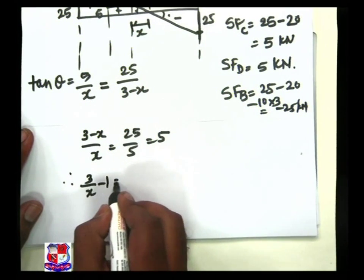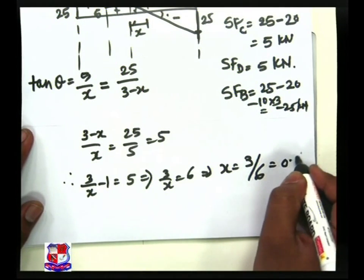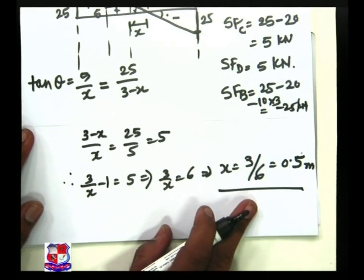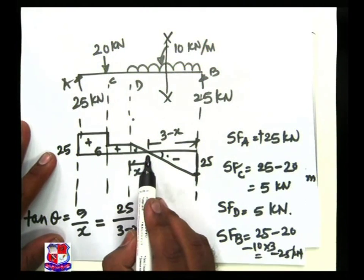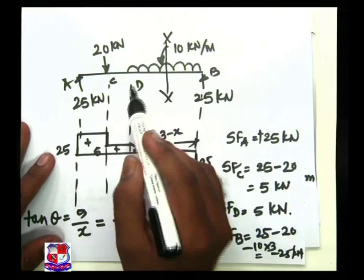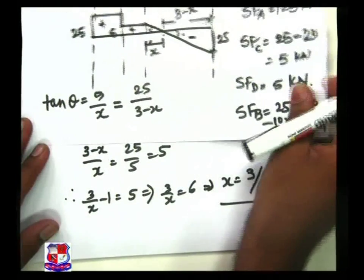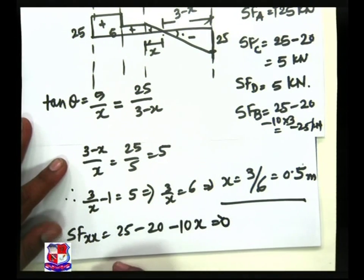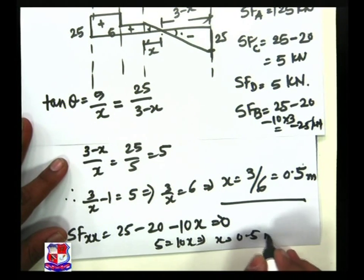Therefore, 3 over x minus 1 equals 5, which gives 3 over x equals 6, so x equals 3 over 6, which is 0.5 meter. The same answer can be verified by taking a section between D and B at distance x: shear force at x equals 25 minus 20 minus 10x equals 0, so 5 equals 10x, giving x equals 0.5 meter. Both methods give the same answer.